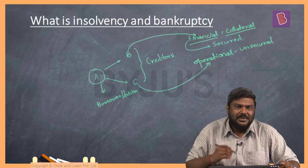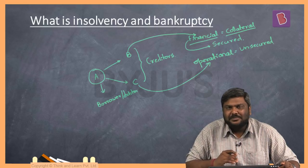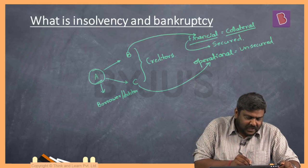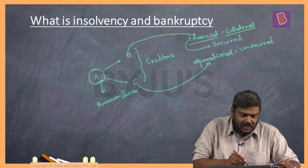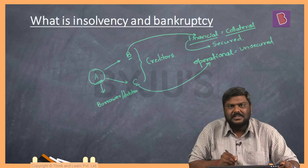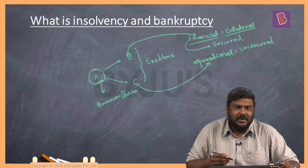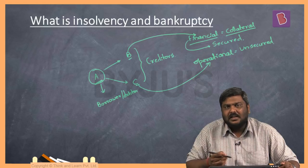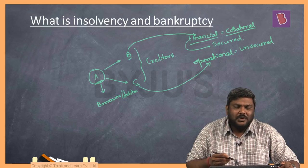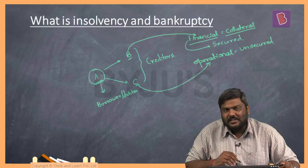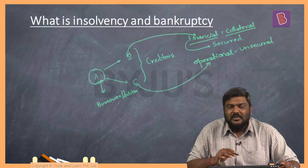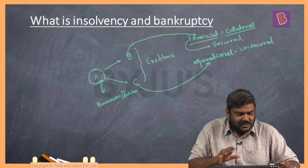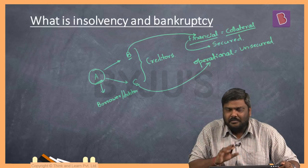Both financial creditors and operational creditors are expecting payments from the borrower. For whatever reasons, assume A is unable to make repayments to bank B or payments to creditor C. This inability to make repayments to creditors is referred to as insolvency. And to resolve this insolvency, we follow a legal process or framework referred to as bankruptcy. So this is the basic idea of what insolvency and bankruptcy mean.